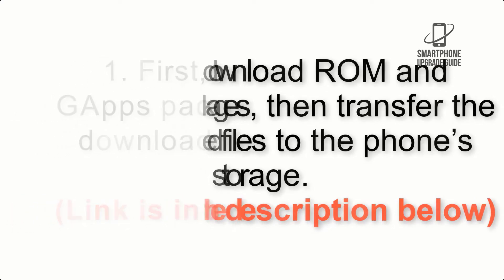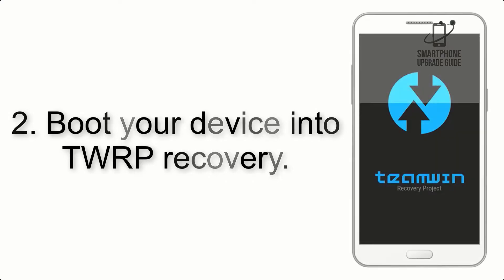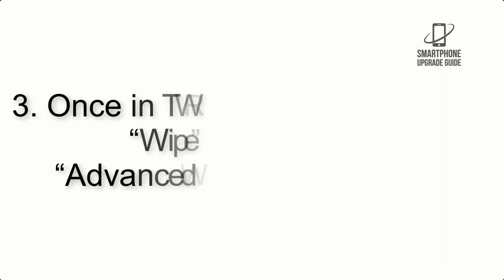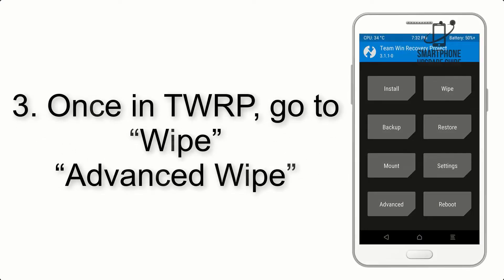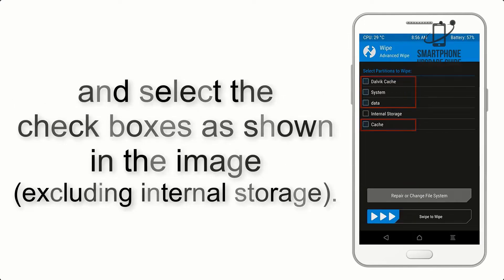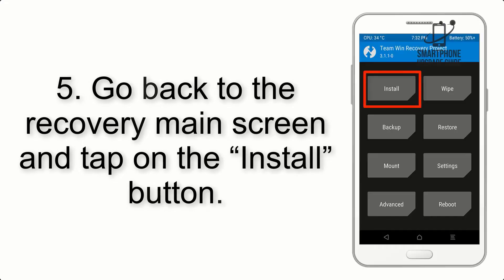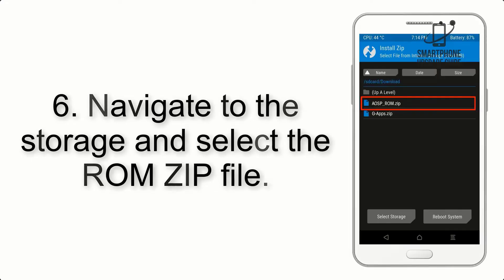Step 2: Boot your device into TWRP recovery. Once in TWRP, click on Wipe, then Advanced Wipe, and select the checkboxes as shown in the image, excluding internal storage. Step 4: Swipe the button to wipe the device.